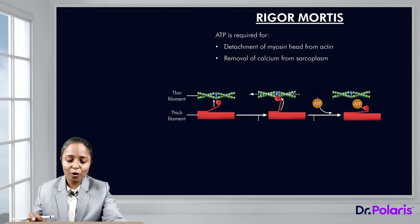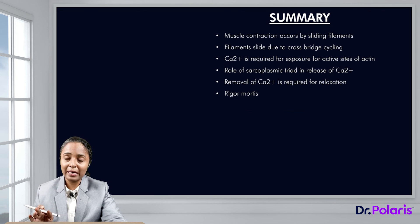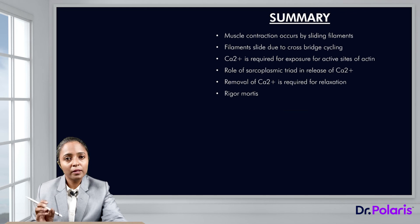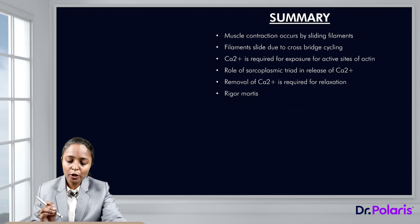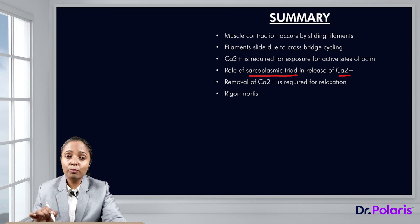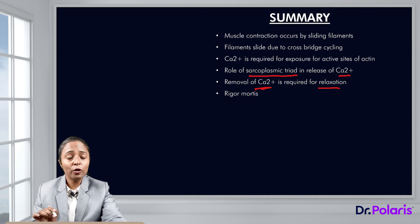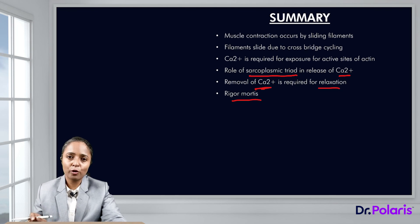In summary, muscle contraction occurs by the sliding filament mechanism, explained by cross-bridge cycling or ratchet theory. Calcium is required for the myosin head to bind to the active sites of actin, and this occurs because of interaction of DHPR receptors with RYR receptors on the sarcoplasmic reticulum. The sarcoplasmic triad plays a key role in calcium release, and removal of calcium via the SERCA pump is required for relaxation. Applied aspects covered include malignant hyperthermia and the basis of rigor mortis.